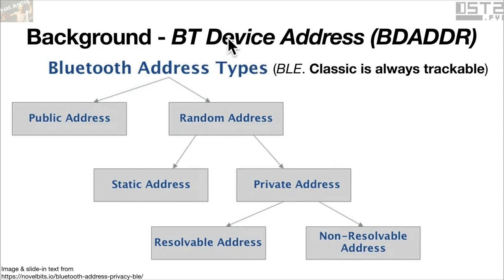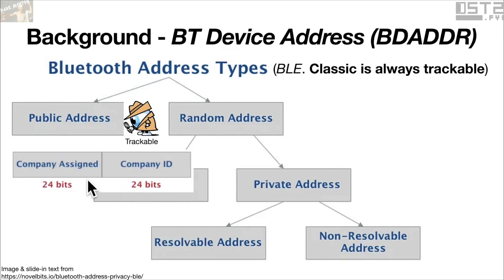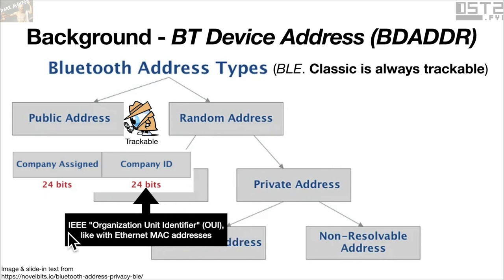There is a thing called Bluetooth Device Address, or BD_ADDR. You can think of it like a MAC address in Ethernet, except it's not quite. In Bluetooth Classic it is basically like a MAC address, but in Bluetooth Low Energy there are four different types of addresses. The first is the public address, which is always trackable. It looks like an Ethernet MAC address because it has a company ID — the IEEE Organizational Unit Identifier (OUI) — 24 bits that ostensibly uniquely identify the company that made the hardware. This address type is always trackable in BLE and in Classic as well.